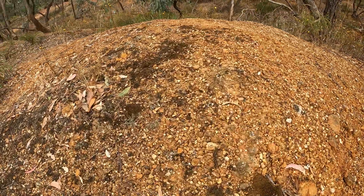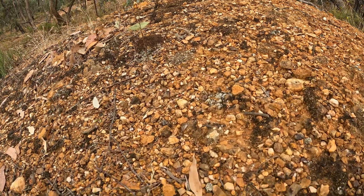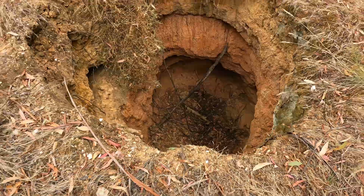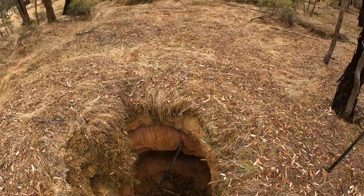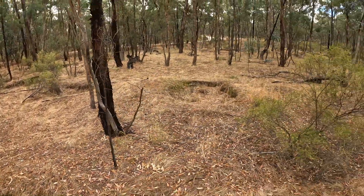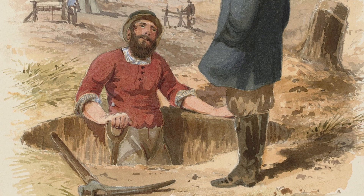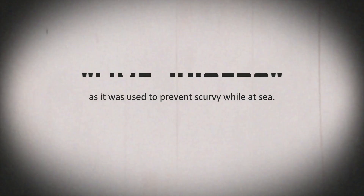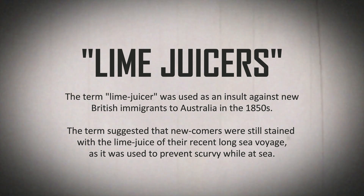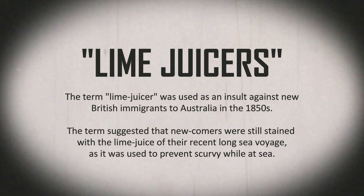The mullock heap is the earth that was pulled out of the ground to reach the wash dirt at the bottom, and as they got closer to the bottom some of the gold-bearing layer was sometimes accidentally thrown up into the mullock. This is partly because there were plenty of new chums on the diggings — lime juicers fresh off the boat — who were new to the game and didn't necessarily know what they were looking for till they were right down in the thick of it.